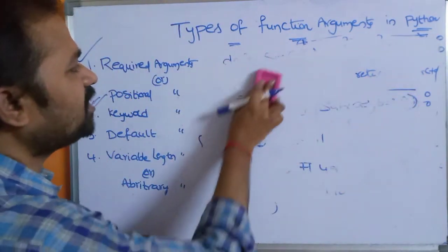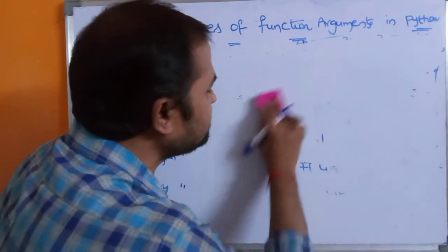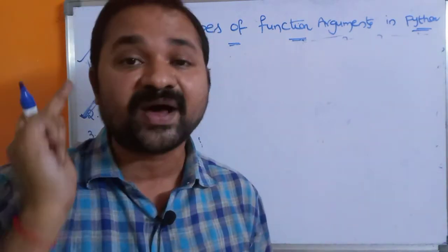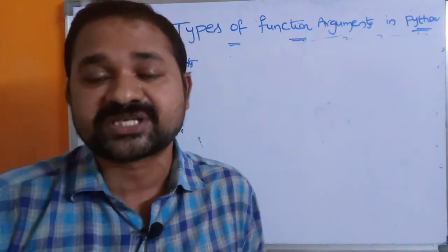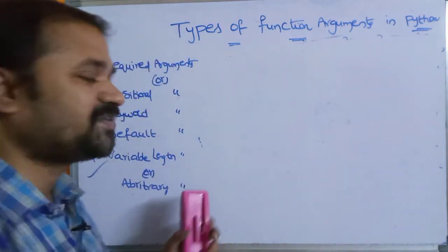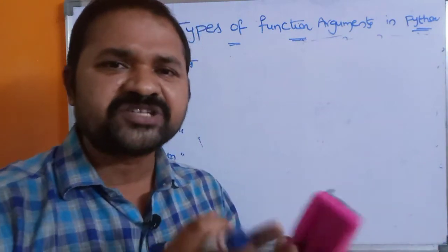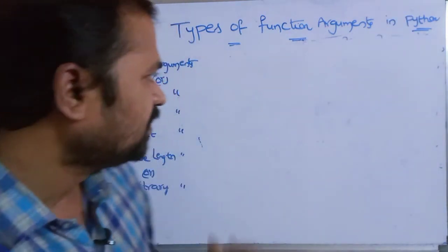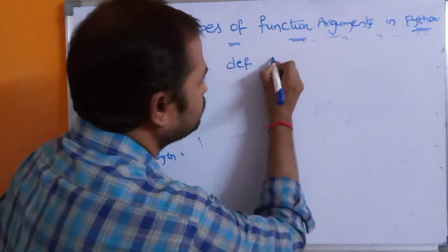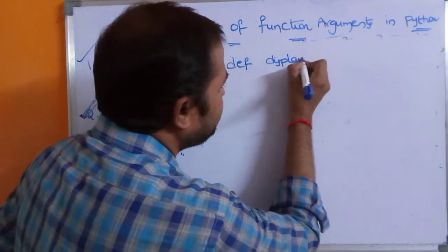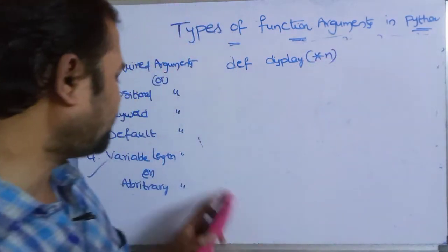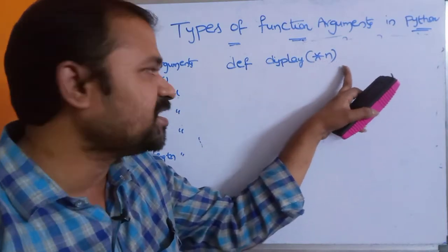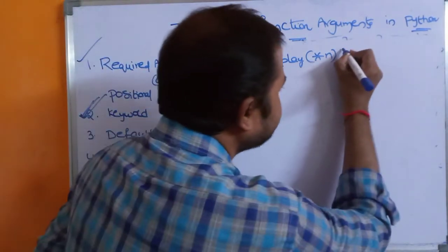Variable length arguments mean we can have any number of arguments. If we don't know how many arguments we need to use in the program, we can go for variable length arguments. In the function call we can specify zero, one, two, ten, twenty, or any number of arguments. For implementing this concept, we use the asterisk symbol before the variable name: def display(*n).